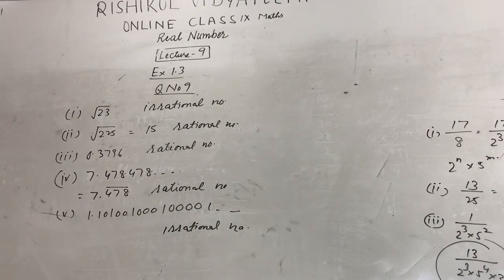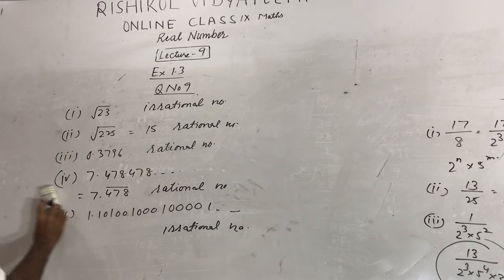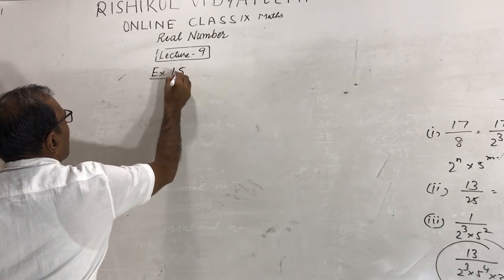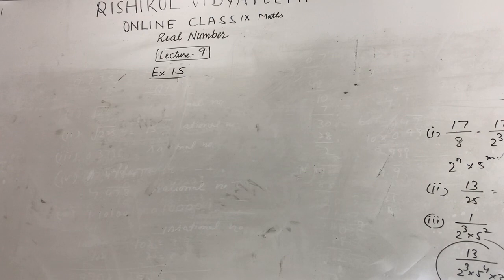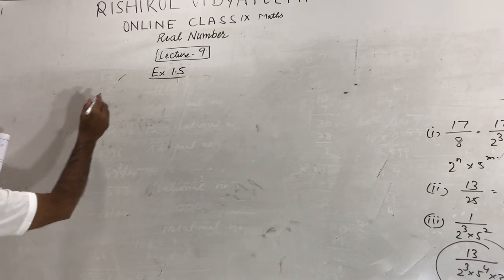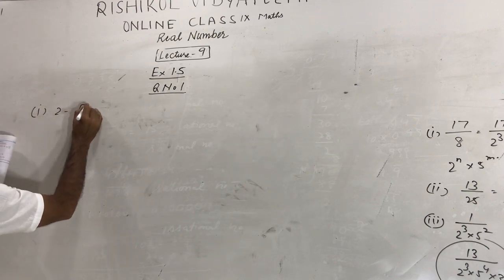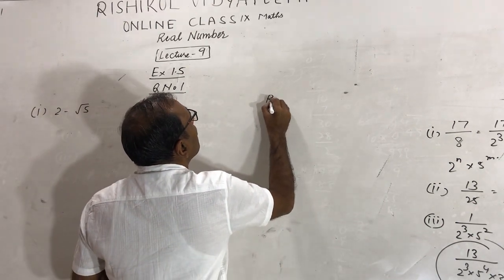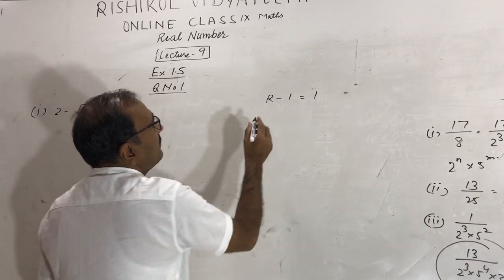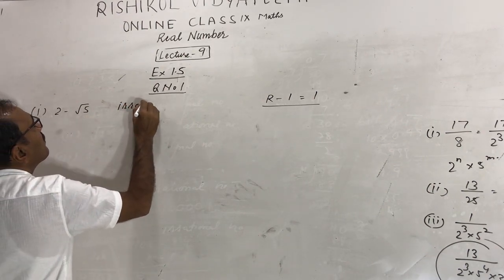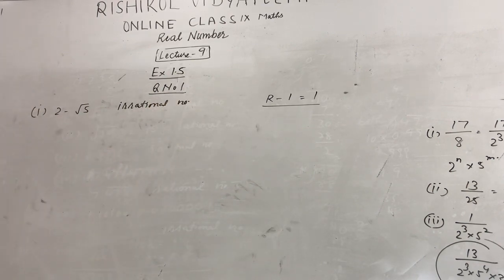Now I will start Exercise 1.5. Classify the following numbers as rational and irrational. Question 1, first: 2 minus √5 — this is rational minus irrational, which is always irrational. So it is an irrational number. If you subtract an irrational from a rational, you always find an irrational number.